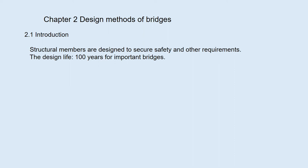Chapter 2, Design Methods of Bridges. When a bridge is planned, its financial and technical feasibilities are first studied. After a bridge is decided to be built, the type of bridge, the span length and widths are chosen from several comparative designs. Structural members consisting of the bridge are then designed to secure safety and other requirements. The design life depends on the purpose of use. It is usually set at 100 years for important bridges.